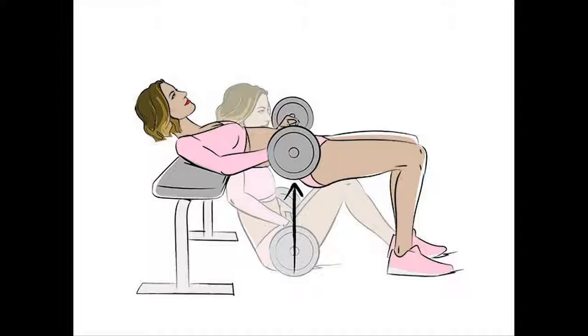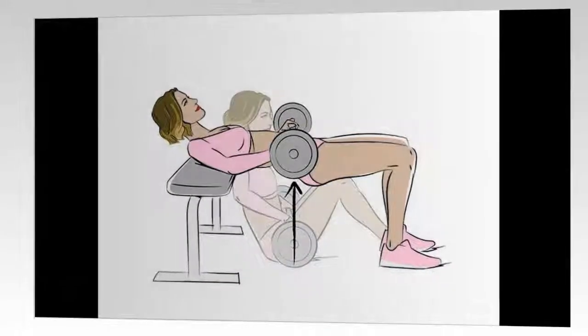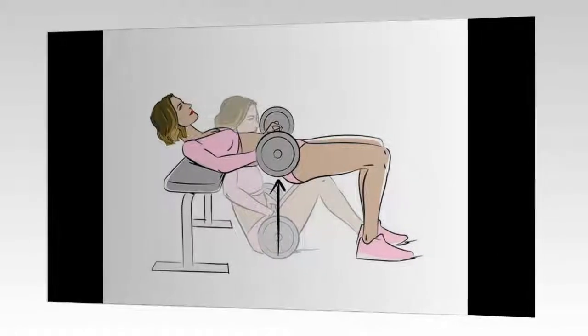5. Hip Thrust. Targets glutes. Do 3 sets of 15-20 reps. Use a 20kg barbell and 5kg weights on each side.